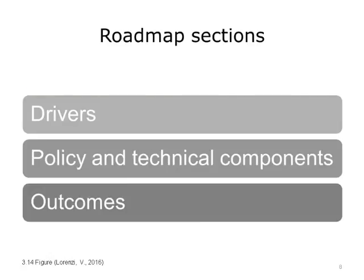Let's look at this journey and its sections. Imagine parallel roads on our journey to the learning health system. The roadmap is divided into three sections, or roads, each with goals and milestones. One set of roads is the drivers. A next set of roads is the policy and technical components. And the next set of roads is outcomes.